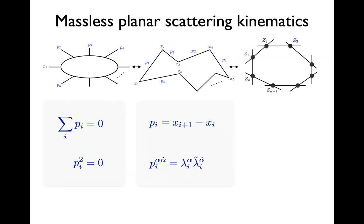I want to introduce a different set of variables by introducing the incidence relation. I define μᵢ for each particle i as xᵢ contracted with λ. Then the pair (λ, μ) together is a twistor variable Zᵢ. It's a projective variable because of the rescaling ambiguity: if I rescale μ and λ in the same way, Z scales homogeneously and I should mod out by this scaling. The good thing about these Z's is that they satisfy no constraints — apart from the scaling ambiguity, all I need to describe planar massless scattering is just a set of N of these projective Z's.